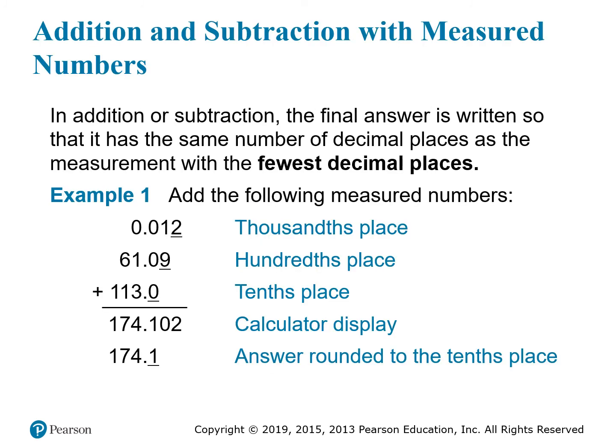For addition and subtraction, however, the rule is different. When you add or subtract measured numbers, the answer will have the same number of decimal places as the measurement with the fewest decimal places. It sounds like the same rule, but this time we're only counting decimal places, not significant figures. When you add numbers together, you line up the decimals so that you keep the place values aligned. This helps you see that the first number has 3 decimal places, the second has 2, and the third has only 1 decimal place. Since the last one has the fewest decimal places, that determines the number of decimals in the answer. The calculator will say the answer is 174.102, but you need to round that to the tenths place to get 174.1.